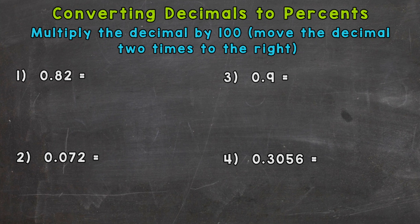So let's jump right into number one, where we have 82 hundredths. We need to multiply that decimal by 100 to get the percent, and we can do that by moving the decimal twice to the right. And we get 82 percent.